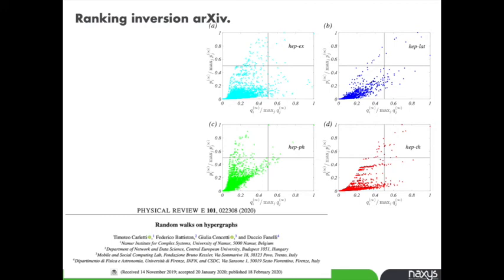To show the importance of this observation, I report an analysis we did on arXiv. We analyzed all subgroups of arXiv, but here I show results for high energy physics, which is divided into four subgroups: experimental, physics, theoretical, and lattice. Here I report on the horizontal axis the ranking given by the projection network, on the vertical axis the ranking given by the hypergraph. Each point is an author ranked according to the two dimensions. If the two ranks were the same, all points would lie on the bisection of this square, but you see they are spread among different quadrants.